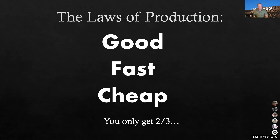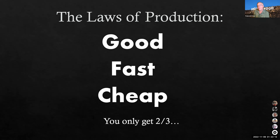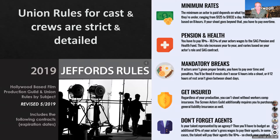A couple of high-level laws of production: good, fast, and cheap — you only get two out of three. If you want it good and fast, it won't be cheap — you'll have to throw money at it. If you want it fast and cheap, it's not likely to be good. If you want it good and cheap, it won't be fast — it'll take a long, long time because you can't throw money at problems. There are a lot of union rules for cast and crews, very strict — insurance, mandatory breaks, and so on.